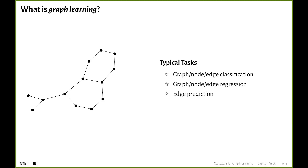Likewise, you can do edge prediction, also known as link prediction, where given a graph you take two unconnected entities and say they need to be connected — for instance, predicting friendships in the Facebook graph, or other interactions between people. The last interesting task is given a distribution of graphs — say, molecules known to be good for certain drug combinations — you want to compare this with another distribution of graphs arising from a machine learning model you trained.